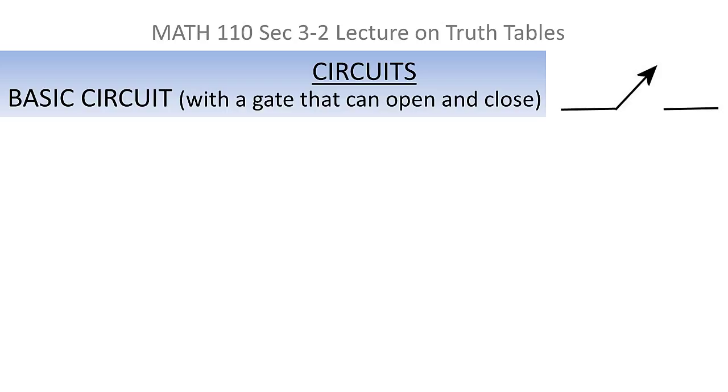Start off with an idea of a basic circuit that has a gate that can open and close. I'm picturing something like that, and you might want to think of it as a wire that might conduct electricity and it has that gate that can be opened or closed. When you picture it, you usually picture it as being opened so you can actually see that the gate is there, but that gate can actually open or close.